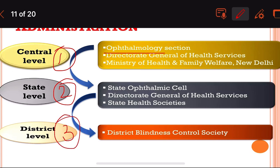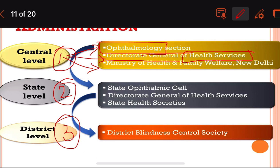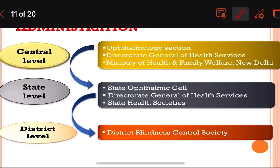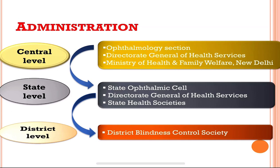At the central level, we have the ophthalmology section, the Directorate General of Health Services, and the Ministry of Health and Family Welfare situated in New Delhi.